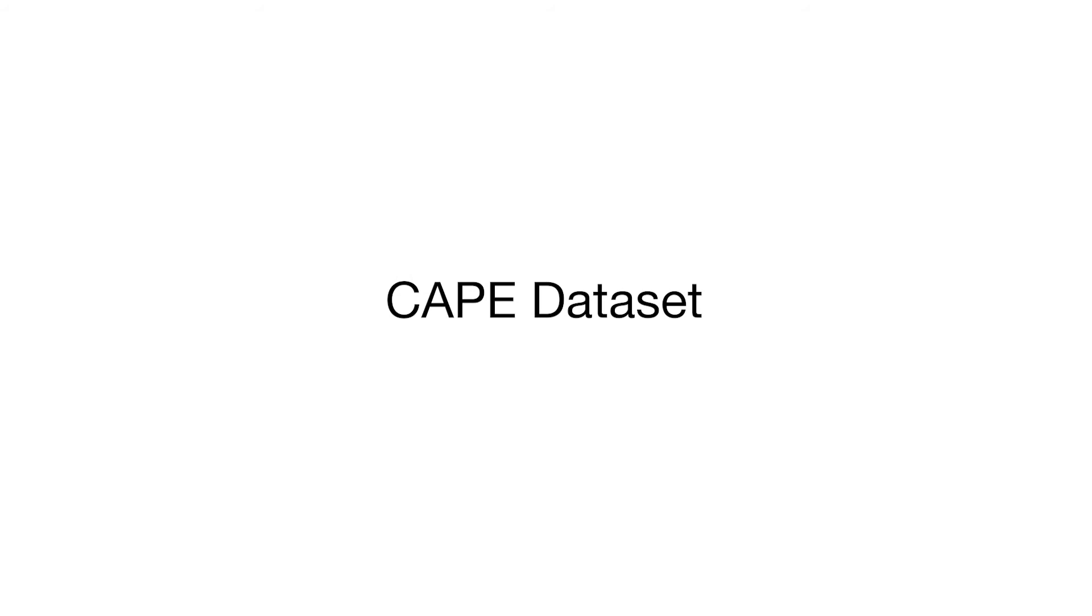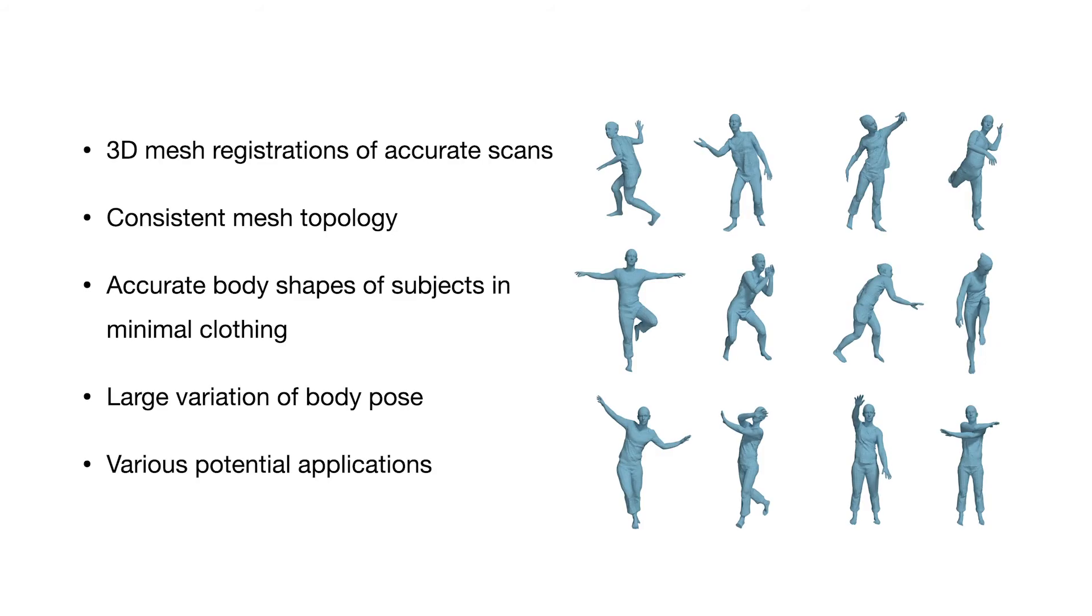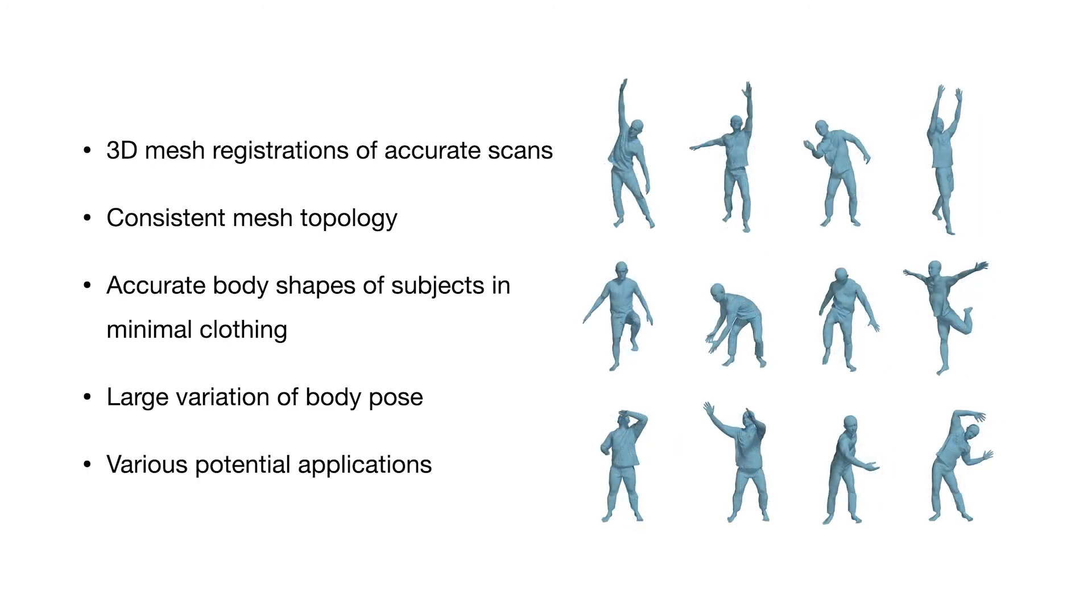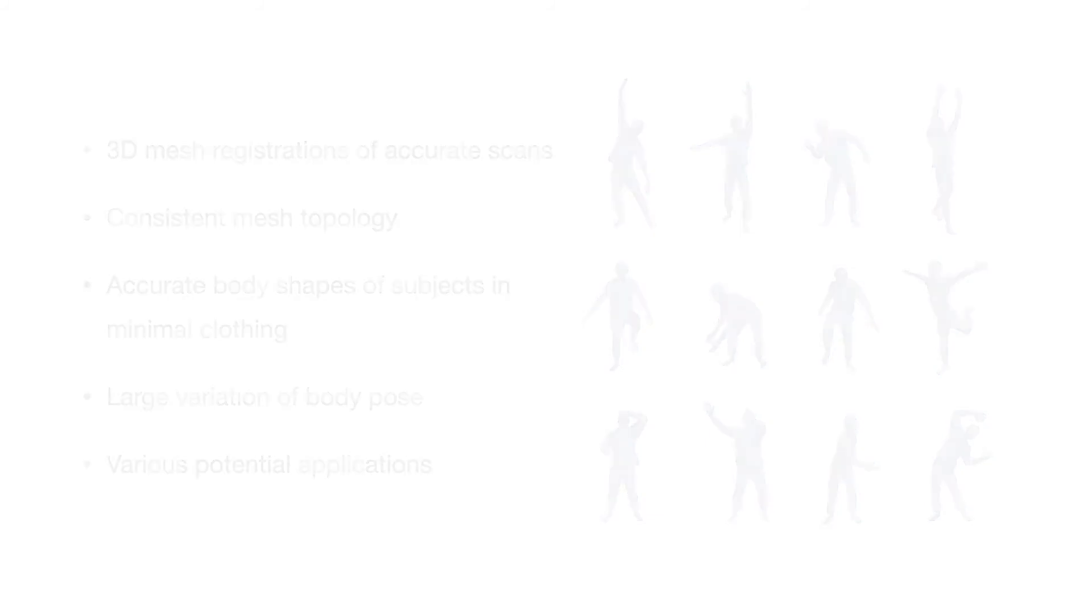To train the model, we build a dataset of 3D meshes with a shared topology by accurately registering a template mesh to 4D scans of clothed people. The dataset may also be useful for tasks such as evaluation of graph convolutional networks and dynamic 3D shape models.